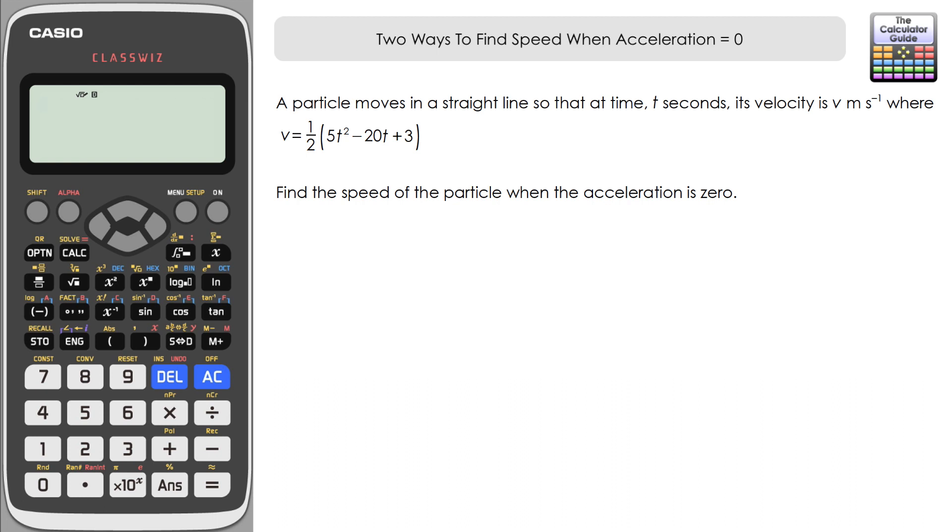Now I'm doing this on a Casio FX 991 EX, although you'd be able to use these techniques with any calculator that has a solver, a polynomial solver, and a derivative function available. Let's take a look at the question. A particle moves in a straight line so that at time t seconds its velocity is v meters per second, where v equals one-half times 5t squared minus 20t plus 3. We've got to find the speed of the particle when the acceleration is zero. We'll have a look at the difference between velocity and speed for this particular example at the very end when we've got the answer.